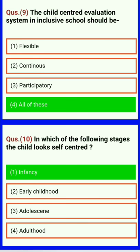The child-centered evaluation system is inclusive. Schools should be flexible, continuous, participatory — all of these. In which of the following stages does the child look self-centered? In fantasy. Maslow's theory is based on needs.